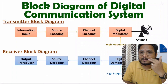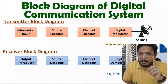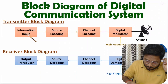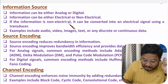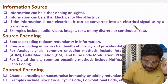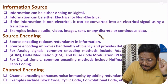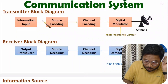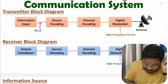For example, if you talk about a voice signal, then voice signal is a non-electrical quantity. We can convert that non-electrical voice signal into an electrical signal with the use of a microphone. So information input can be analog or digital, electrical or non-electrical. If it is non-electrical, it can be converted into an electrical signal using a transducer. Information can be audio, video, image, text, or any discrete or continuous data. After this first block, we will have electrical information, which could be analog or digital.